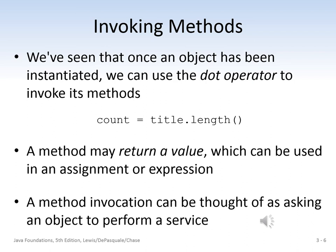Once an object has been instantiated, we can use the dot operator to invoke its methods. A method may or may not return a value, which can be used in an assignment statement or an expression. A method invocation can be thought of as asking an object to perform a service. In this case, the object is title, the method being invoked is the length method, there's no argument being passed, and the length method returns an integer value assigned to the variable count.